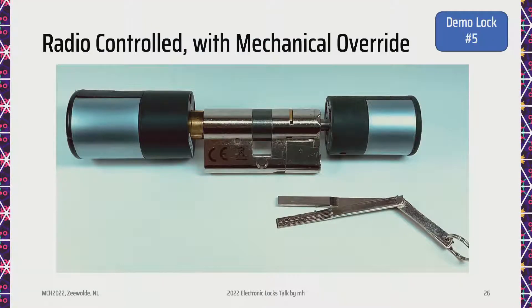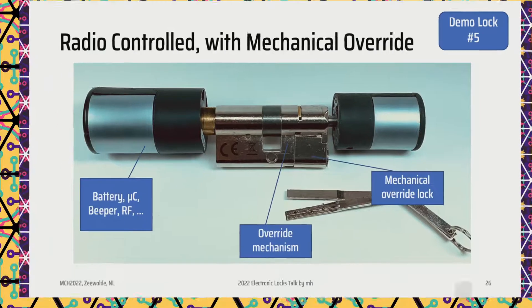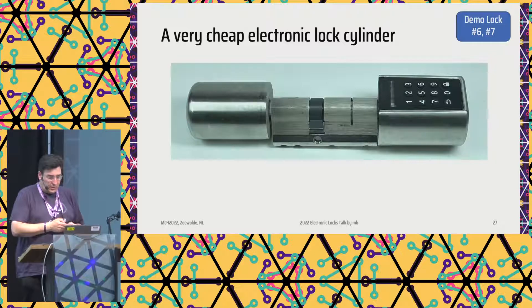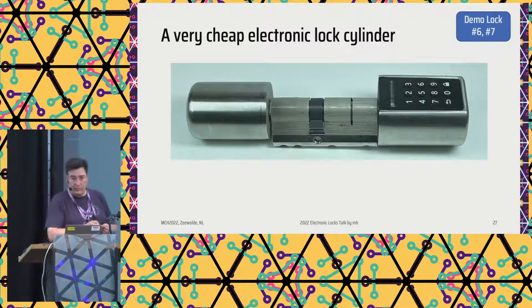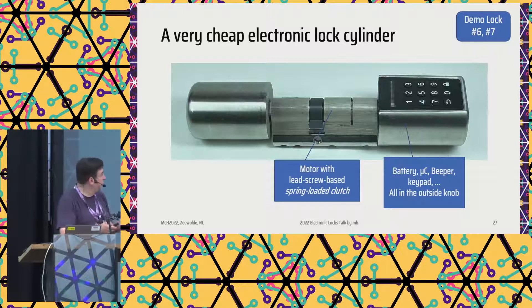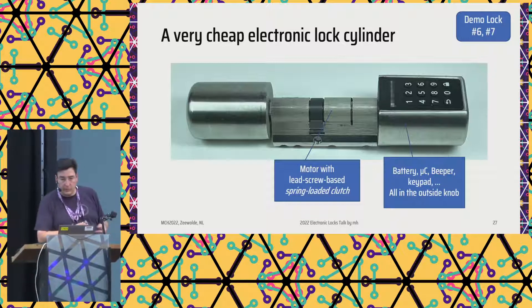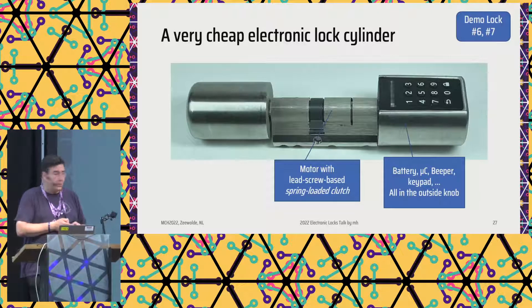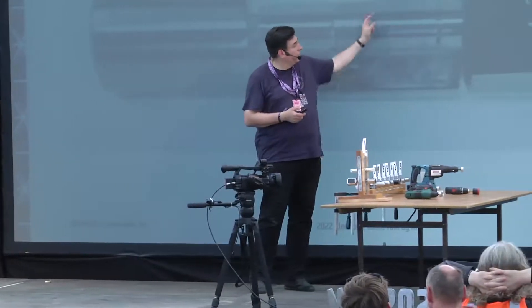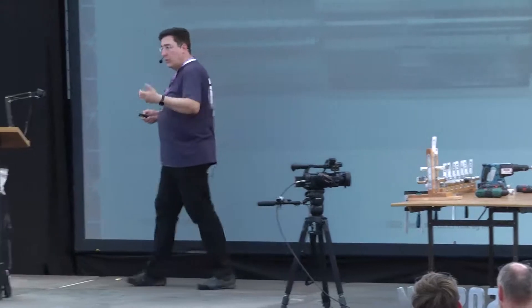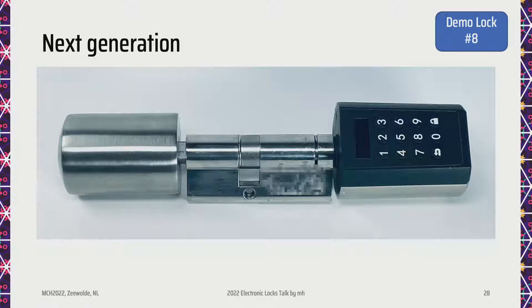There's a very similar design by another manufacturer. This one even has a mechanical override. It's a really neat design, but same problem. Then the lock locks — as I've shown before, they are quite expensive, like a few hundred euros per piece. There are also cheap electronic lock cylinders you can import from Asia, typically. This one has a lead screw-based clutch mechanism, but spring-loaded, and all the electronics on the outside of the knob. There are actually two generations, pretty similar but slightly different. And then a completely different next generation actually has two little motors in here — one can be activated through Bluetooth and the other requires a USB override. But both of them actually have the problem we've seen.